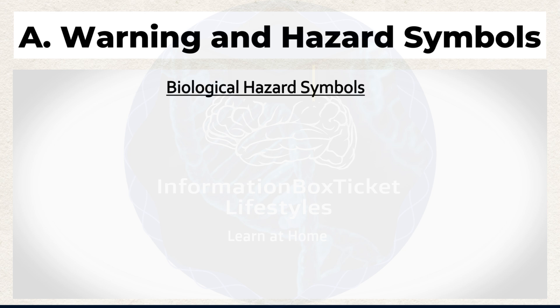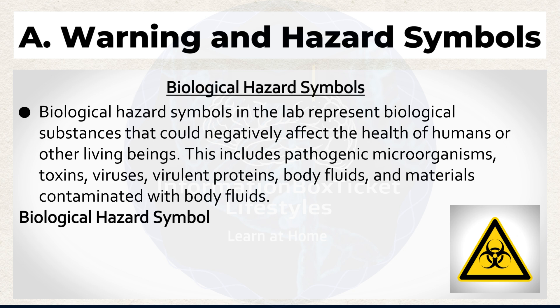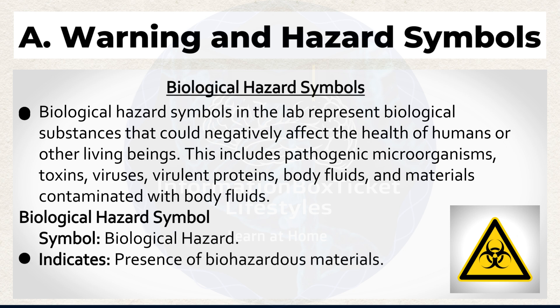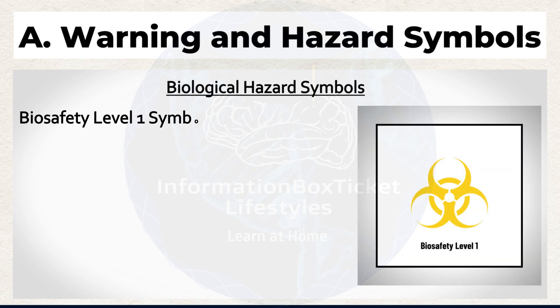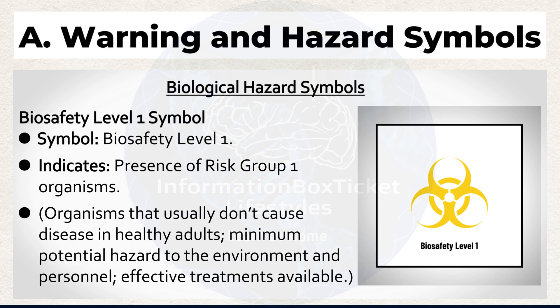Biological hazard symbols in the lab represent biological substances that could negatively affect the health of humans or other living beings. This includes pathogenic microorganisms, toxins, viruses, virulent proteins, body fluids, and materials contaminated with body fluids. Biological Hazard symbol indicates the presence of biohazardous materials. Biosafety Level 1 symbol indicates the presence of Risk Group 1 organisms — organisms that usually don't cause disease in healthy adults, with minimum potential hazard to the environment and personnel, and effective treatments available. Biosafety Level 2 symbol indicates the presence of Risk Group 2 organisms — organisms that can cause mild infections, moderate hazard to environment and personnel, less likely to spread through aerosol, with treatment and prevention available.